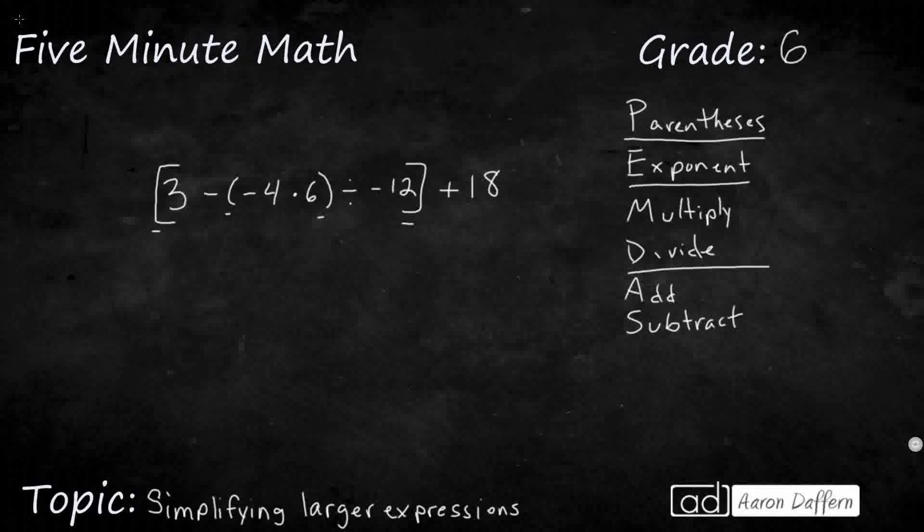So let's deal with our parentheses first. We have this larger bracket, which covers most of the expression, which means this plus 18 is coming at the very end. We'll just add 18 to whatever comes out of this bracket, and that will be the simplified version. So we have to deal with the parentheses inside the parentheses.